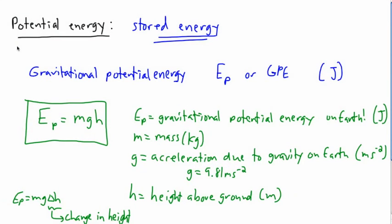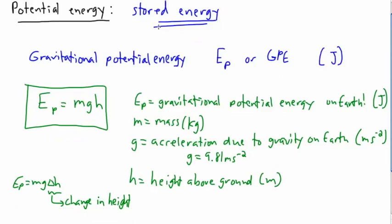We were just looking at examples of potential energy. I told you that has to do with some sort of storing of energy. Now, we talked about gravitational potential energy, and we can use this equation: Ep equals mgh, where these things are known values.